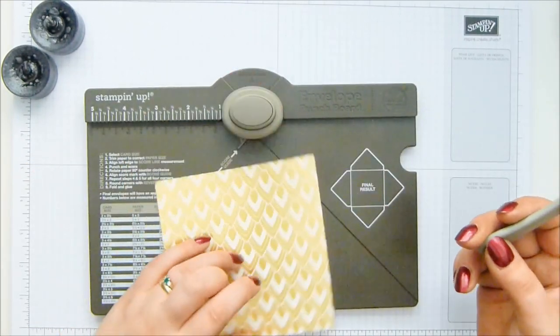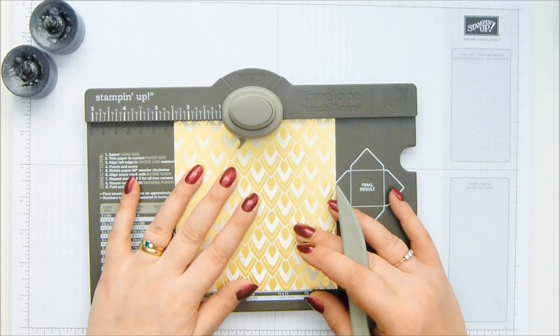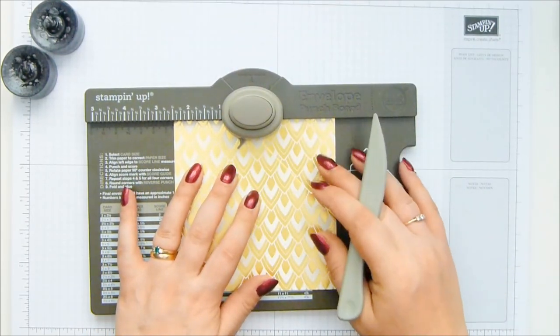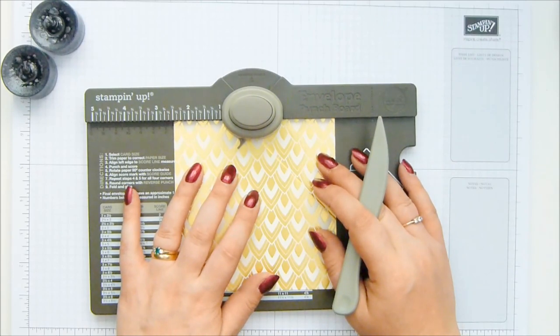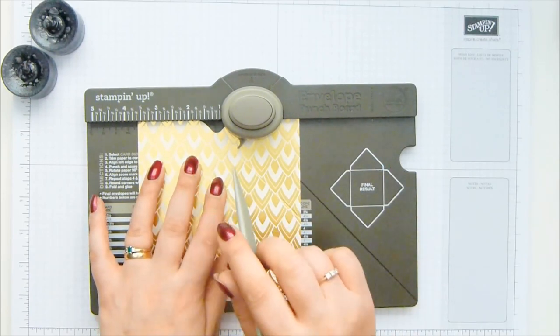I have my envelope punch board. Don't know which way to go around, but it doesn't matter. So the first score line comes at two and a half inches, which is 6.3 centimeters, and you do need to be accurate for the metric folk. That's three and five eighths of an inch is the second punch and score line on the same side, which is 9.2 centimeters.